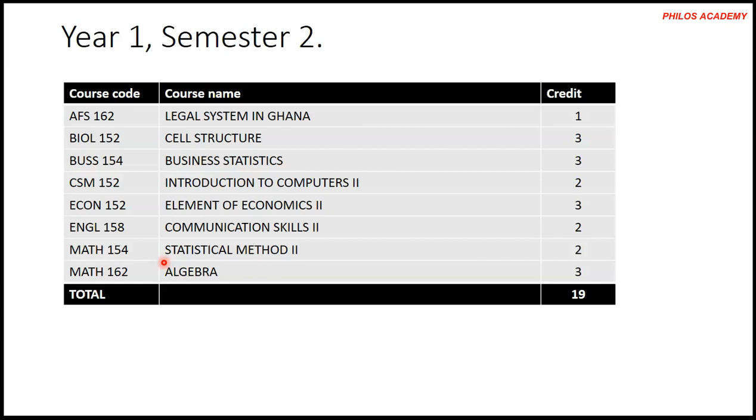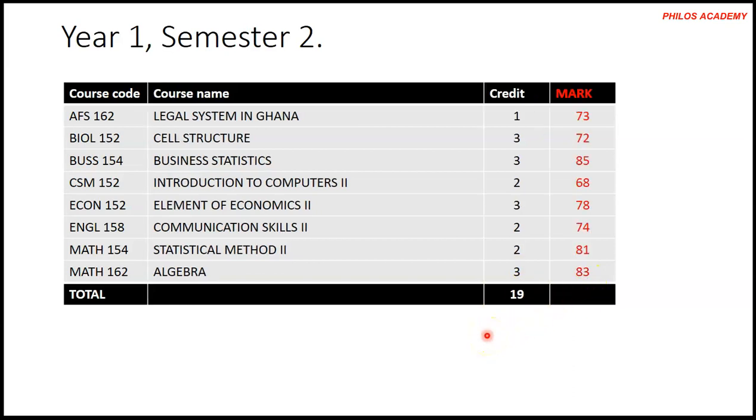Let's say the second semester you are doing Legal System in Ghana, Cell Structure, Business Statistics, Introduction to Computers 2, Elements of Economics 2, Communication Skills 2, Statistical Method 2, and Algebra. The credit hours also total 19 - don't expect every semester's credit hours to be the same. For the new semester, you get 73 in Legal System, 72 in Cell Structure, 85 in Business Statistics, 68 in Computers, 71 in Economics, 74 in Communication Skills, 81 in Statistical Methods, and 83 in Algebra. You see that Kofi has tried as much as possible to get better marks than the previous marks.